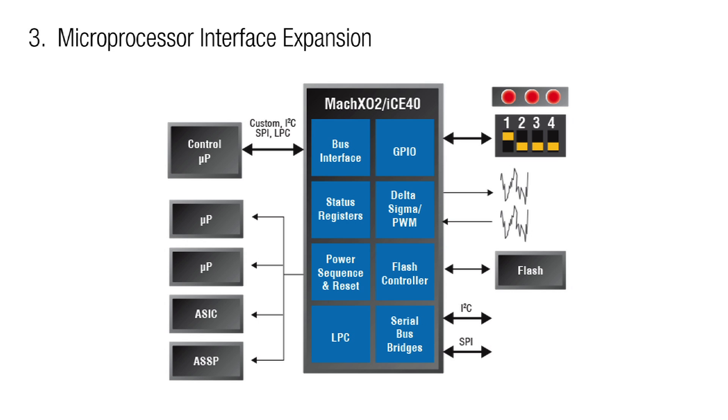Microprocessor interface expansion: save cost by adding GPIO to low-cost microcontrollers and perform voltage-level translation with ease. In summary, at the heart of the Mach XO3 device family is an FPGA with very flexible clocking, robust and powerful I/O, and lots of internal memory. It is perfect for control of system and chip level resets, chip enables, address decoding, multiplexing, and other traditional functions at which programmable logic devices excel.